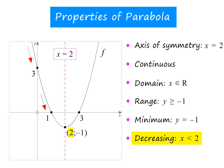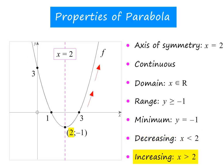because the graph is sloping down to the left of the turning point. And it is increasing in the interval x greater than 2, because the graph is sloping up to the right of the turning point.